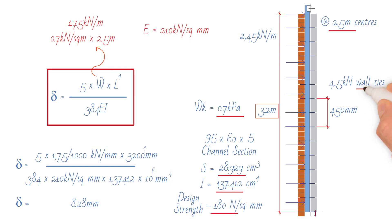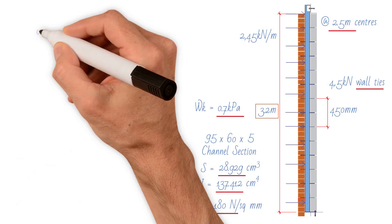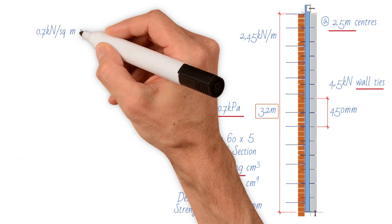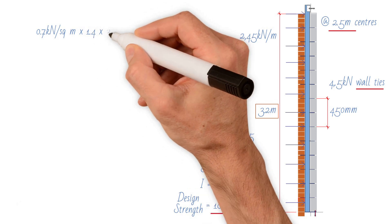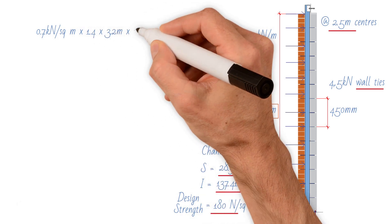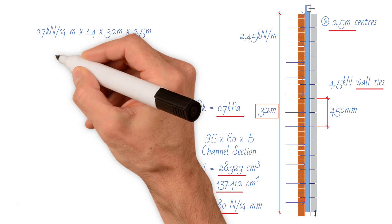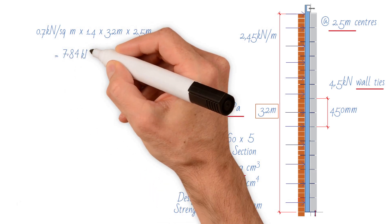Finally, wall ties check. Total load on windpost equals 0.7 kilonewtons per square meter times partial safety factor 1.4 times height 3.2 meters times length 2.5 meters. This results in a value of 7.84 kilonewtons.